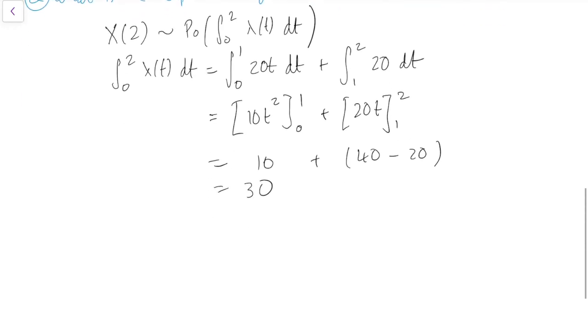So X2 is distributed as a Poisson distribution with rate 30, but the expected value of the Poisson distribution is just its parameter. So that's 30 as well. So the expected number of calls in the first two hours is 30.